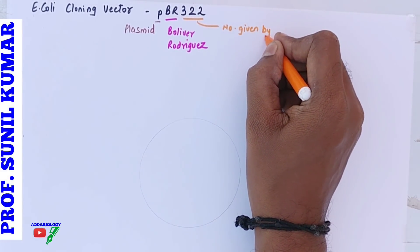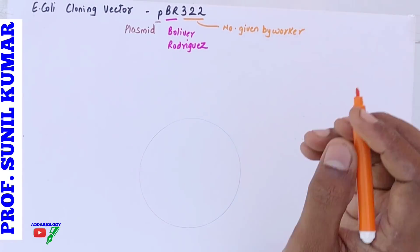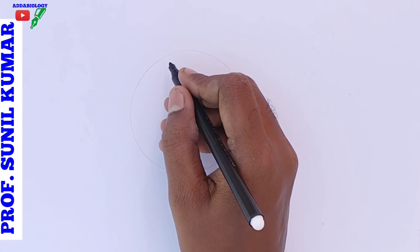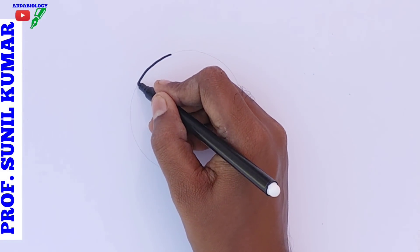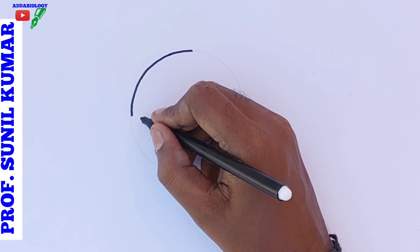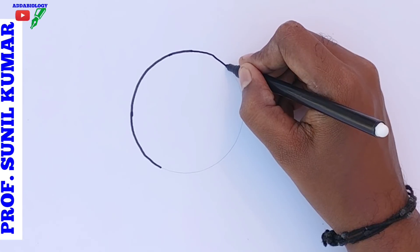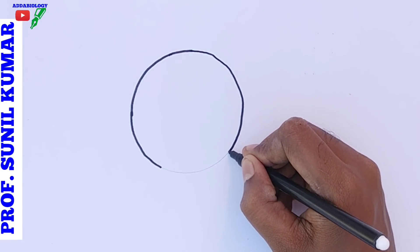Whenever we are denoting plasmid it is denoted by small p where B and R indicates the name of the scientist. We also have pUC where small p, capital U and capital C comes into picture. Small p indicates plasmid, UC indicates University of California where the plasmid has been discovered.